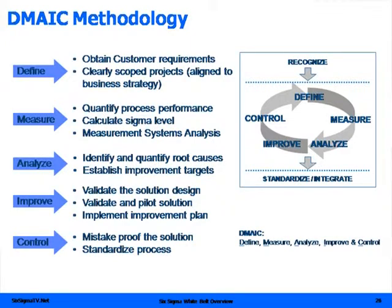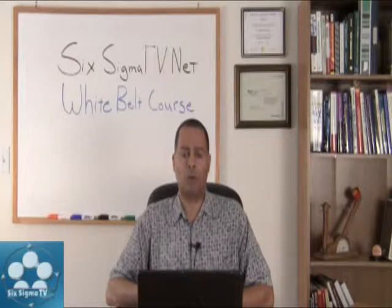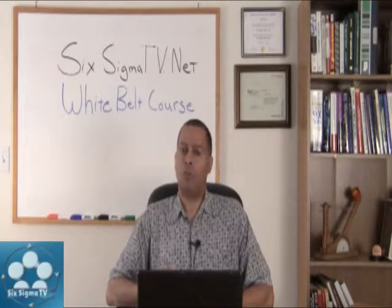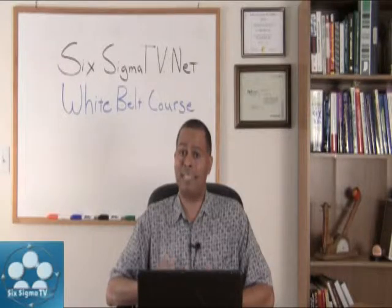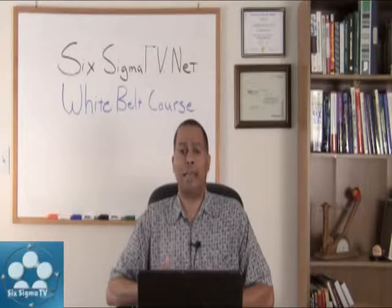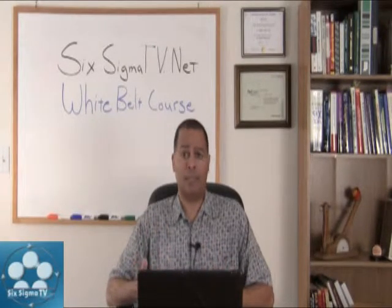In the Measure phase you want to quantify the performance of your process. You want to calculate your Sigma levels and also do a measurement system analysis — when you're putting your data collection together, you want to make sure it's valid and that everybody's on the same page when gathering your data. Calculating your Sigma level, CPK, or DPMOs gives you baseline metrics. You can also do that in the Define phase.